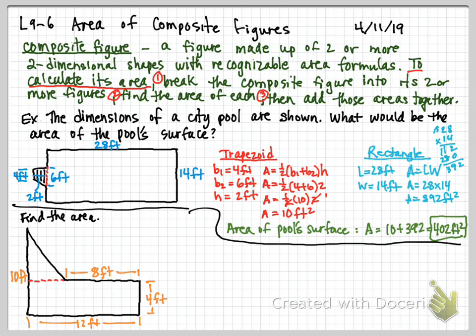Looking at it another way: the length from here to here is 12, and from here to here is 8, so this piece is 4 feet. The whole left side is 10 feet, and this portion is 4 feet, so this piece is 6 feet. So I'll break it into a triangle and a rectangle — a 12-by-4 rectangle.